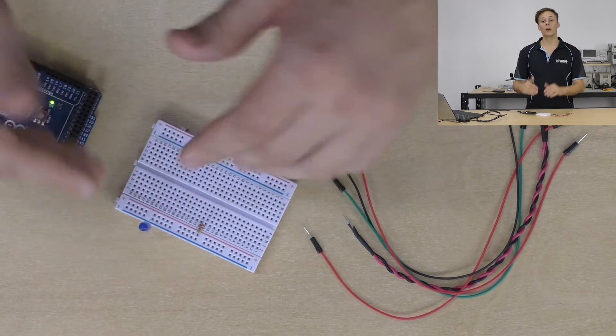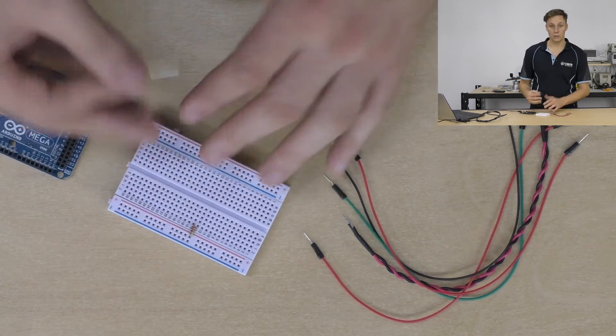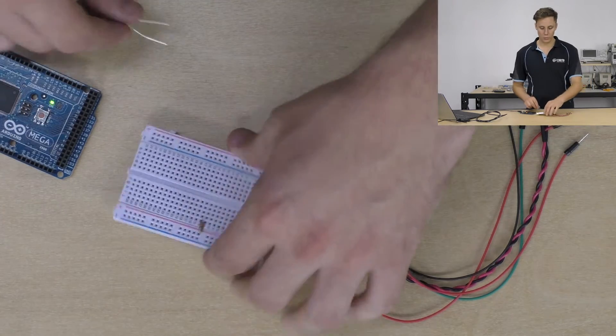Underneath are metal strips with little spring-loaded v-shaped contacts and when you push a component leg in there it forces itself in between the contacts and the spring holds it together and makes an electrical connection.